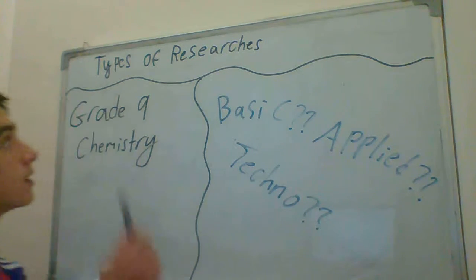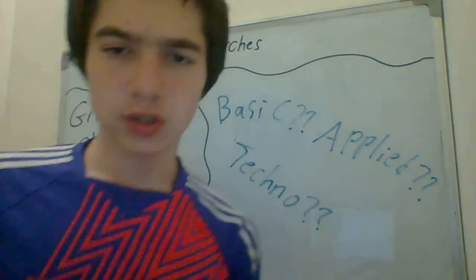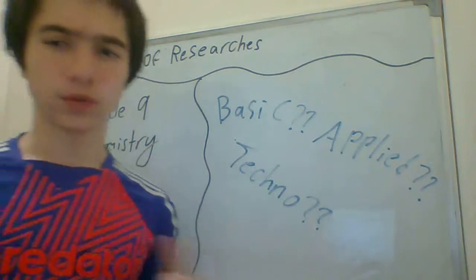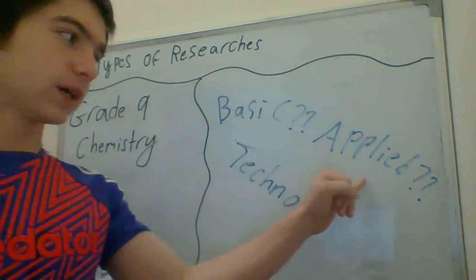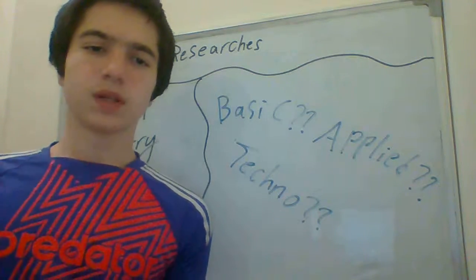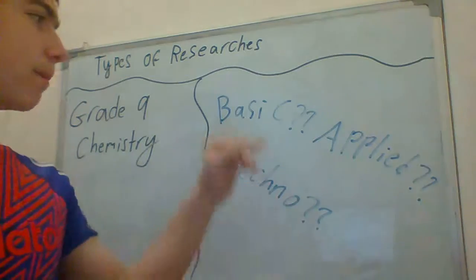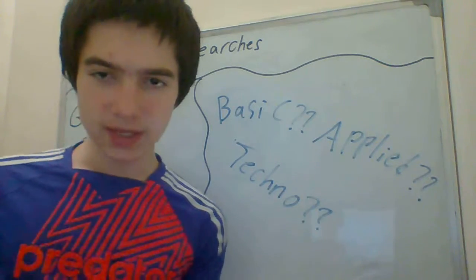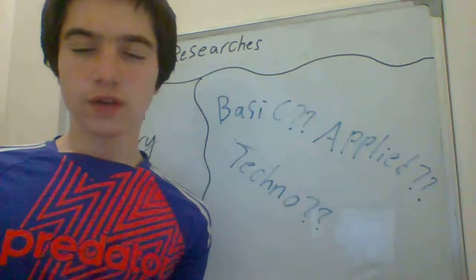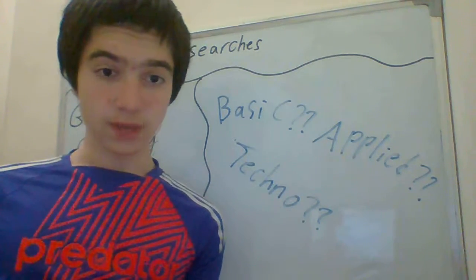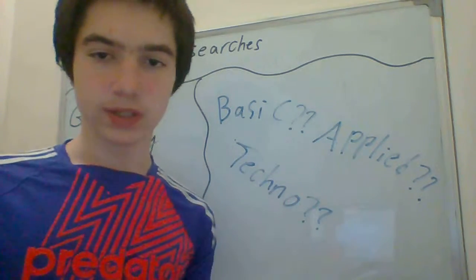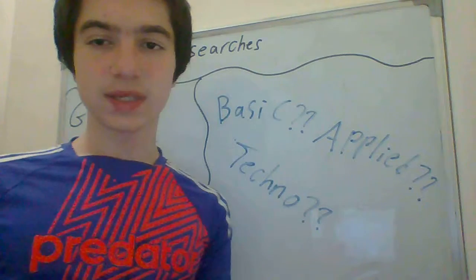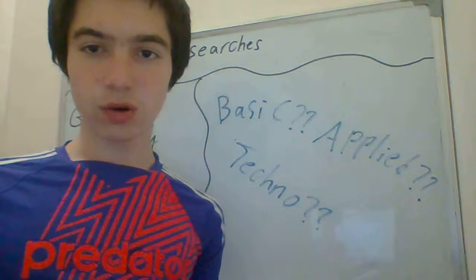In this lesson I'm going to talk about types of research, which is a grade 9 lesson. There are three types: basic research, applied research, and technological development. Basic research is defined as the increase of knowledge — you're just researching to increase your knowledge. Most scientists weren't forced to study, meaning they're doing basic research by their own choice, just for the sake of increasing their knowledge.